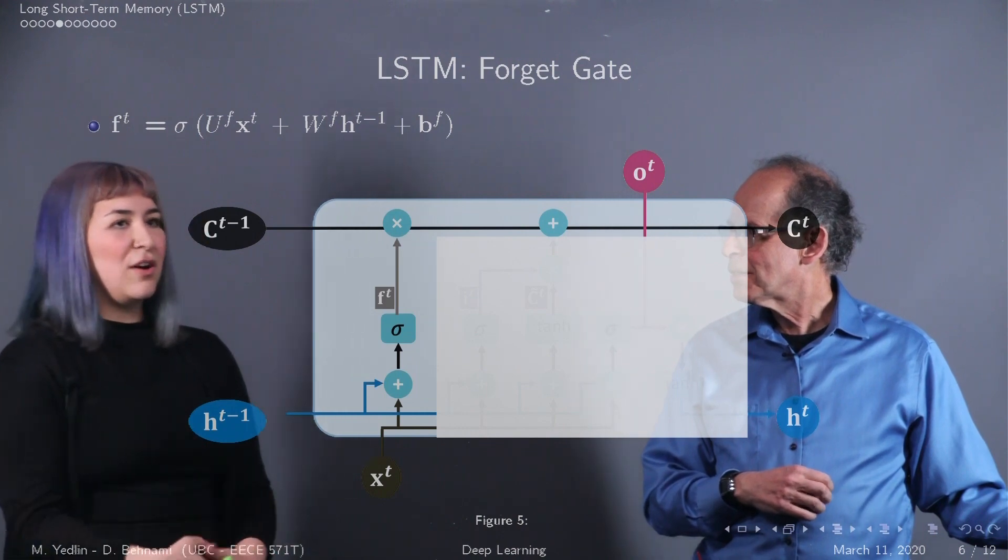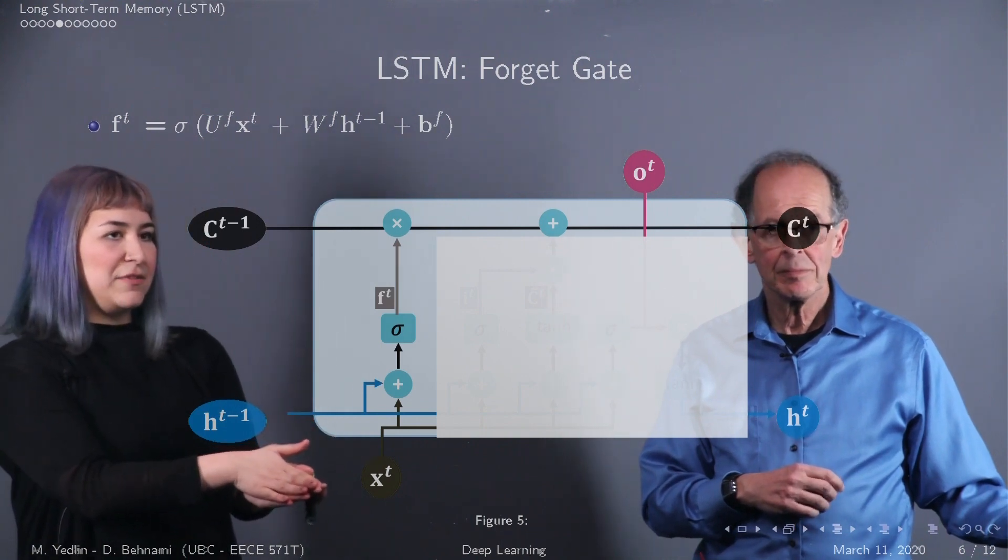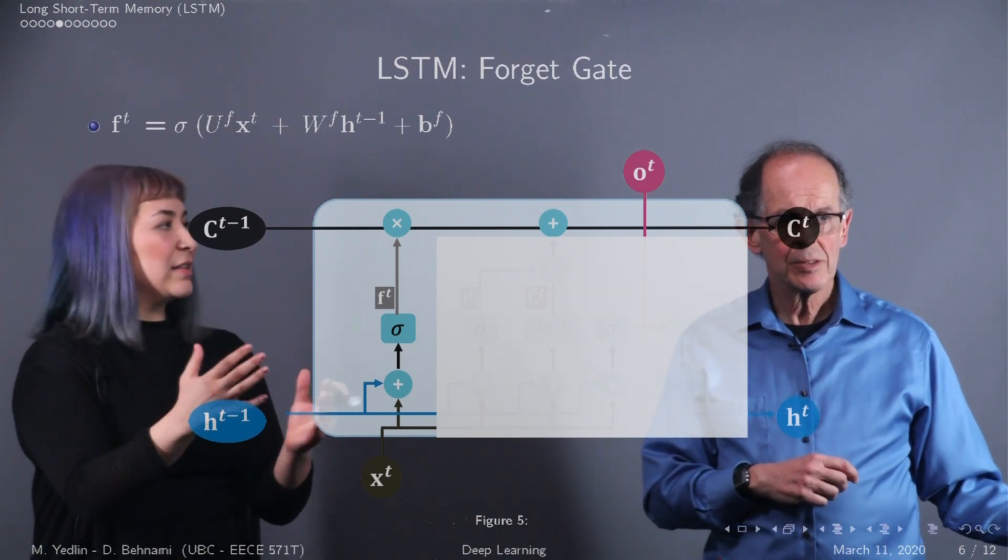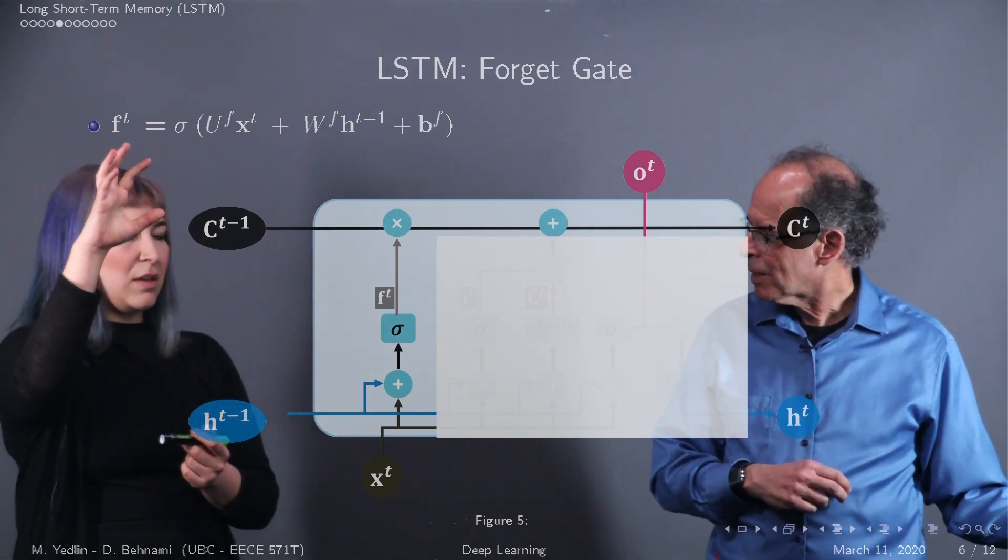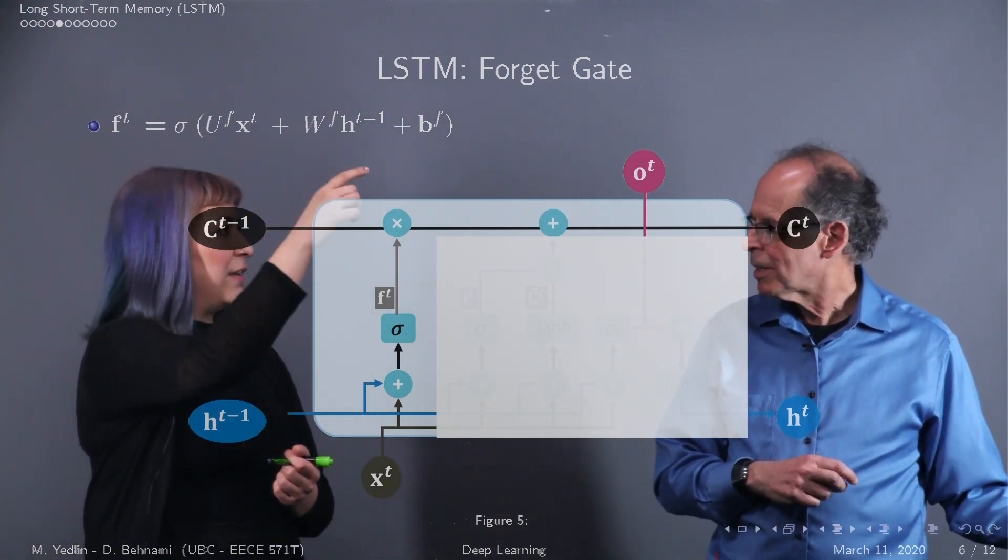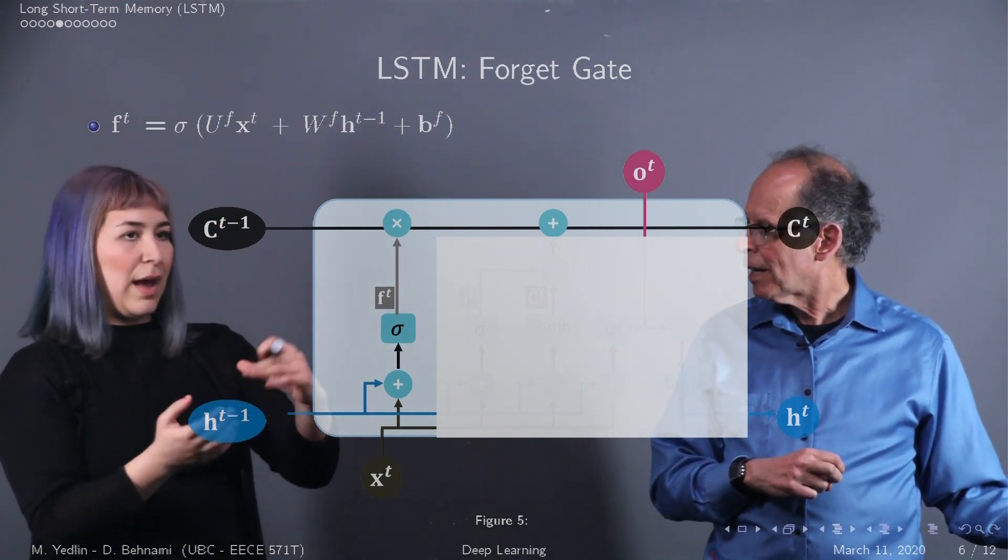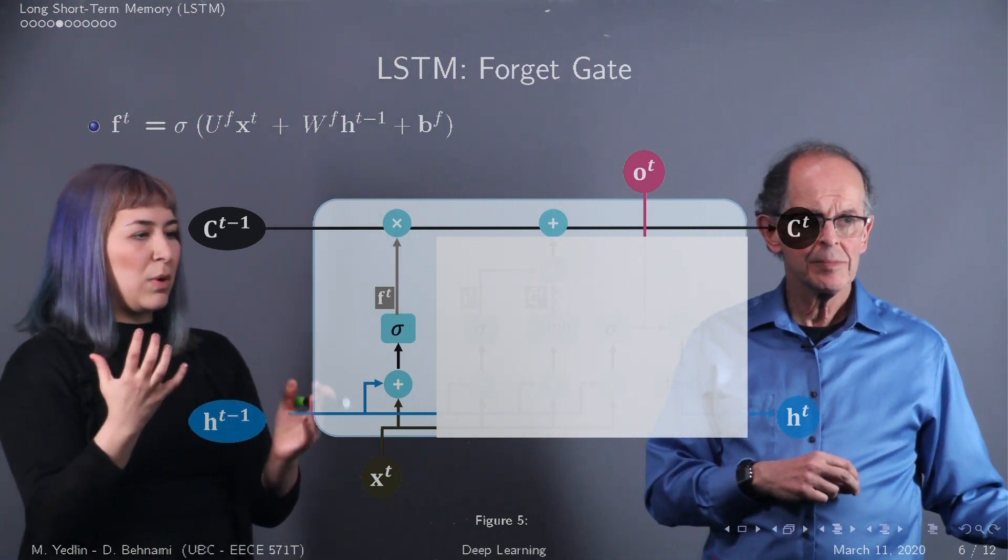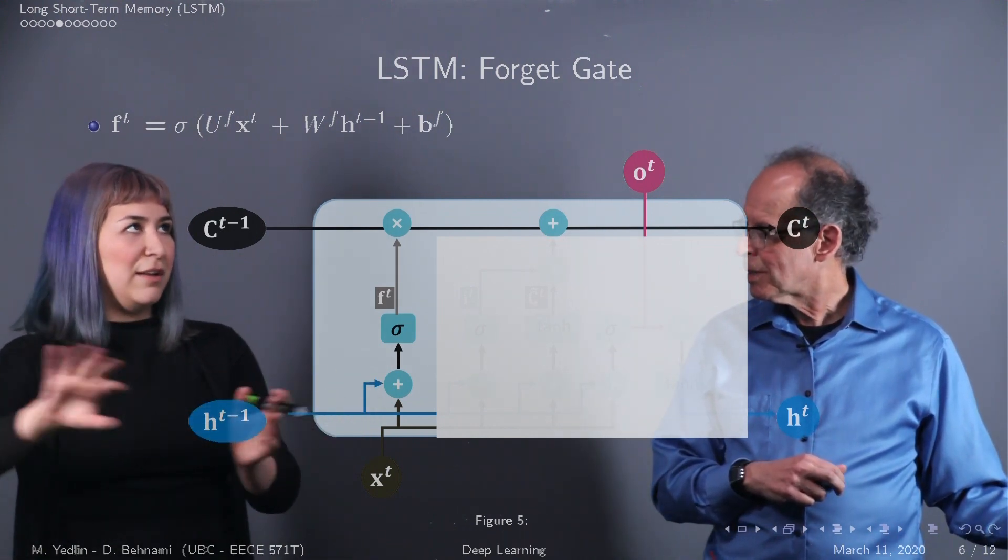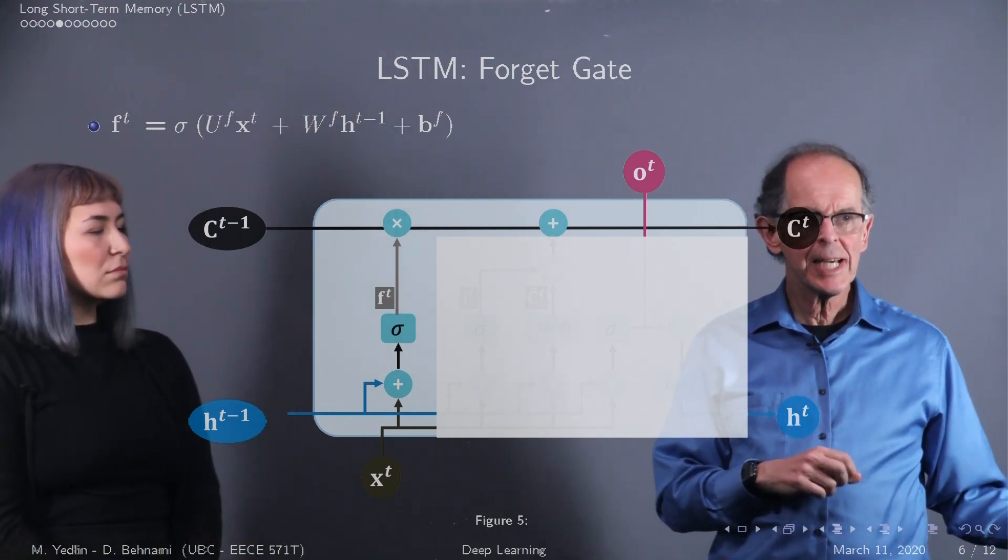The other gate we have is called the forget gate. We've denoted with an F for forget. The inputs are the same. You still have your x of t and h from the previous step going in. Mathematically, it's the same as the input, but the parameters of the forget gate and the input gate are decoupled. So here we have U of F, W of F, and a bias for F. The sigmoid controls the output of F of t, which essentially means we have control over how much information we're forgetting from previous step. If it's zero, we're forgetting none of it, and if it's one, forgetting all of it.